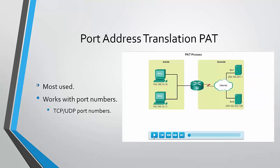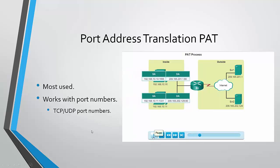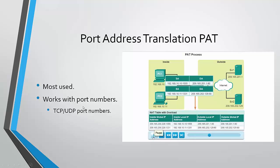Finally, we have Port Address Translation, also known as PAT. PAT is one of the most used NAT services because it works with port numbers instead of multiple public addresses, using TCP and UDP port numbers. Here is how the PAT process works: both computers want to send packets. Before they are translated, both are using their own private addresses but with different ports. The first PC is using port 1555 and PC2 is using port 1331. The destination addresses are two different servers — server 1 and server 2.